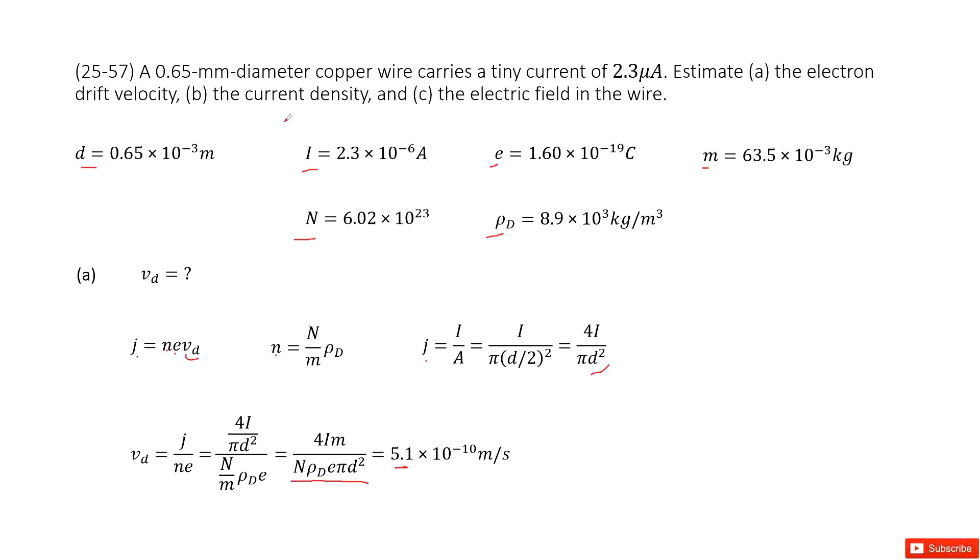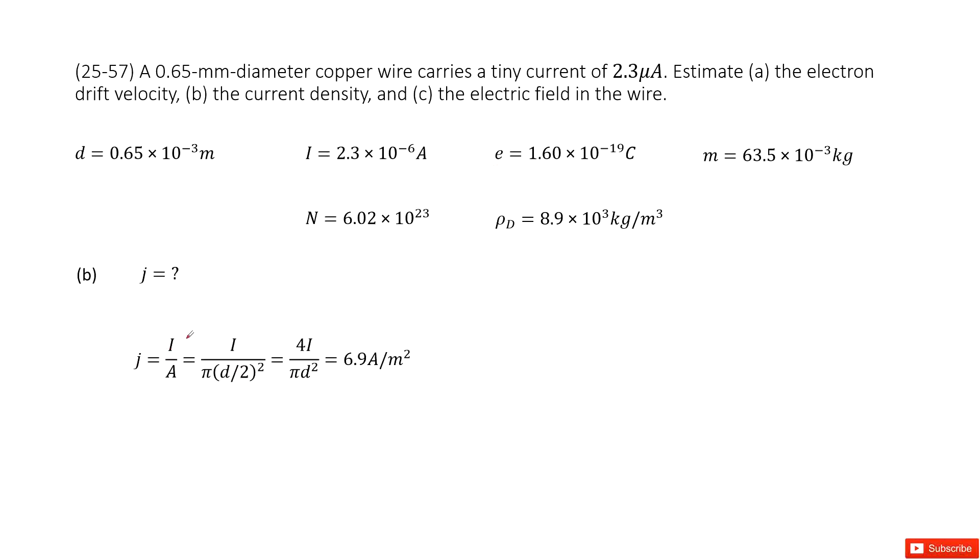The second part is for the current density. So the current density, as we talked about, is just the current divided by the cross-sectional area. This is the current divided by pi r squared. So r is rendered as the diameter over 2. So you get it there.